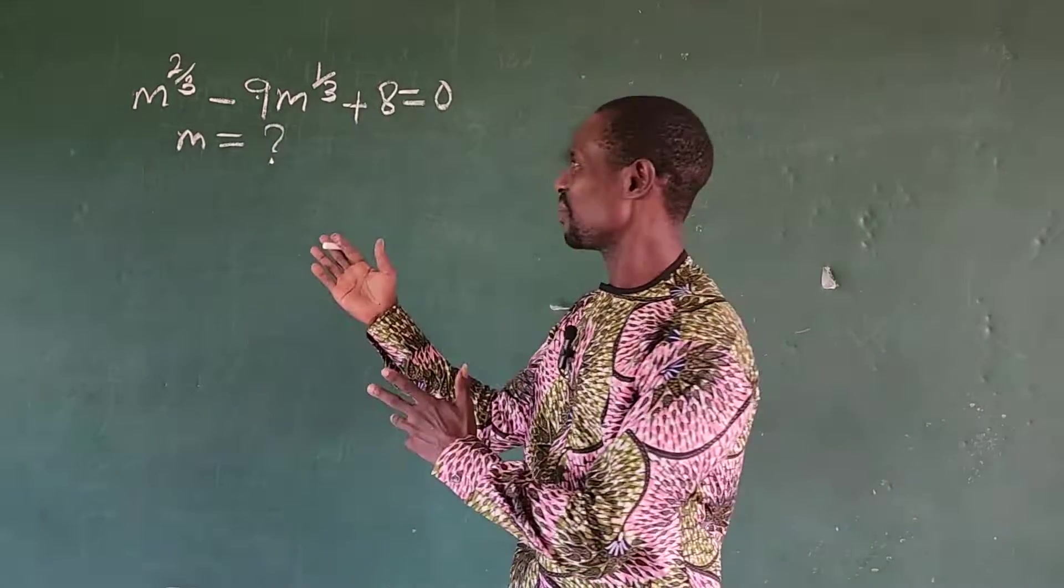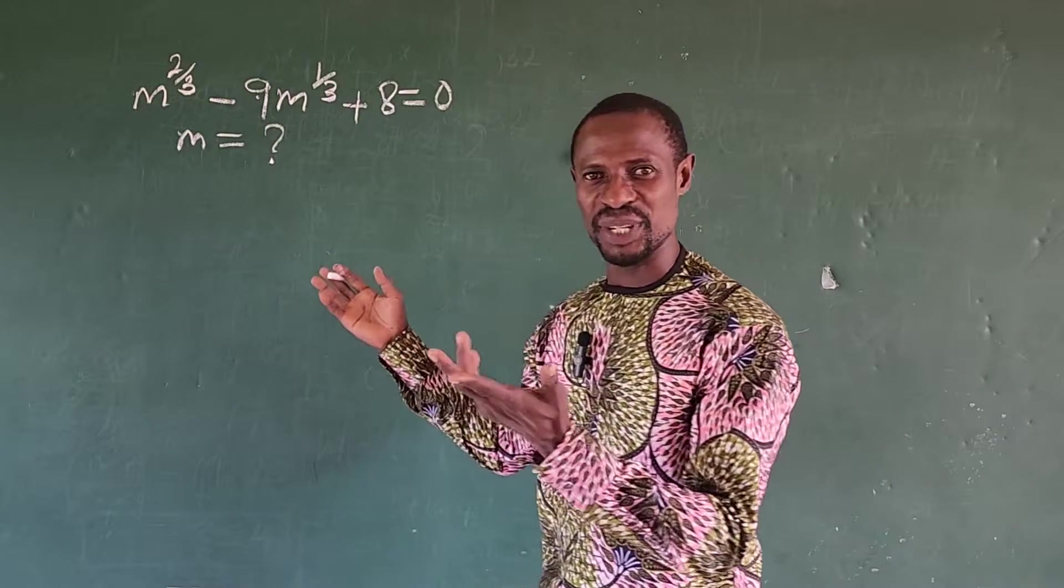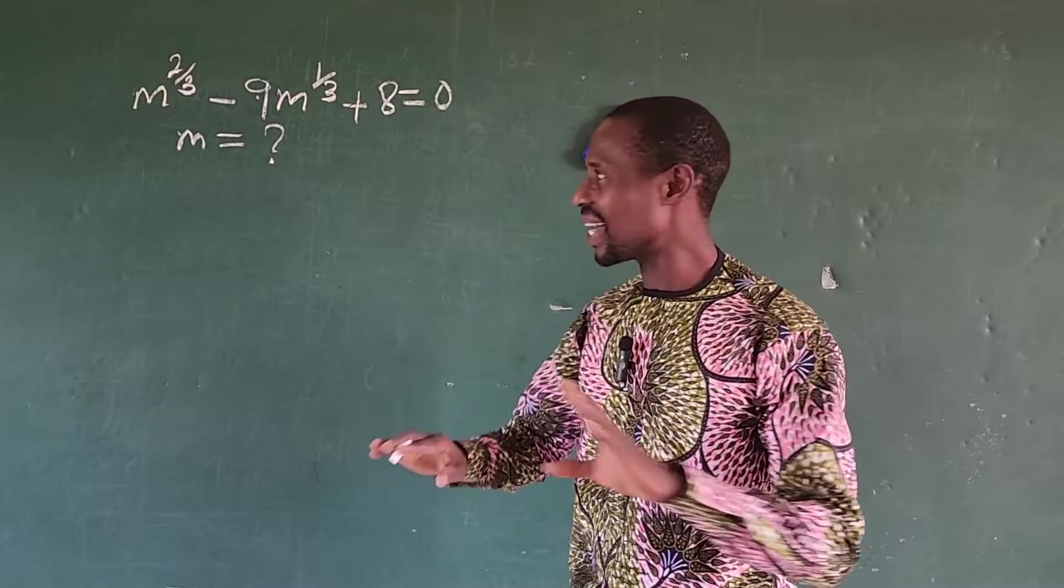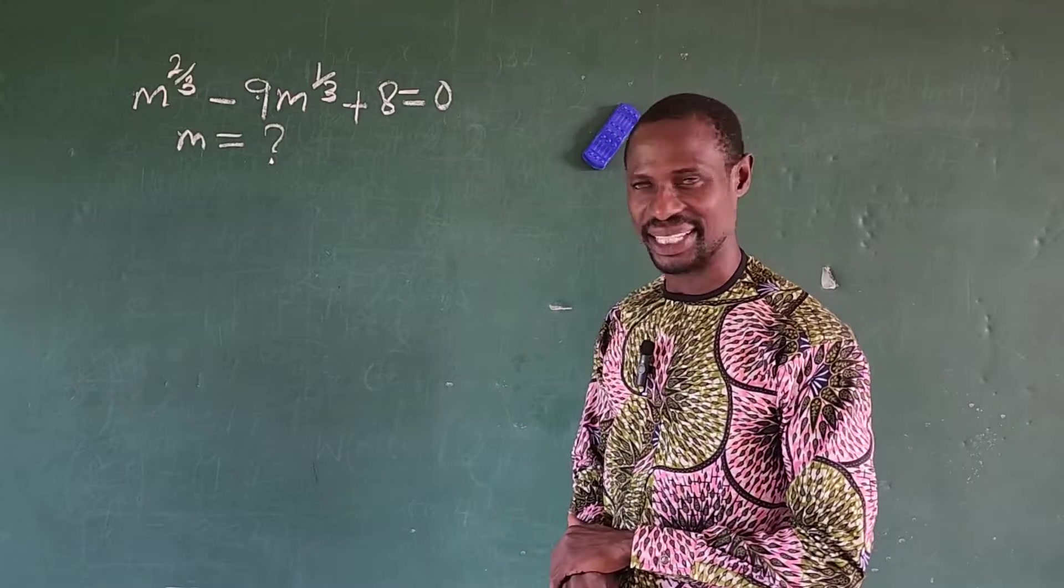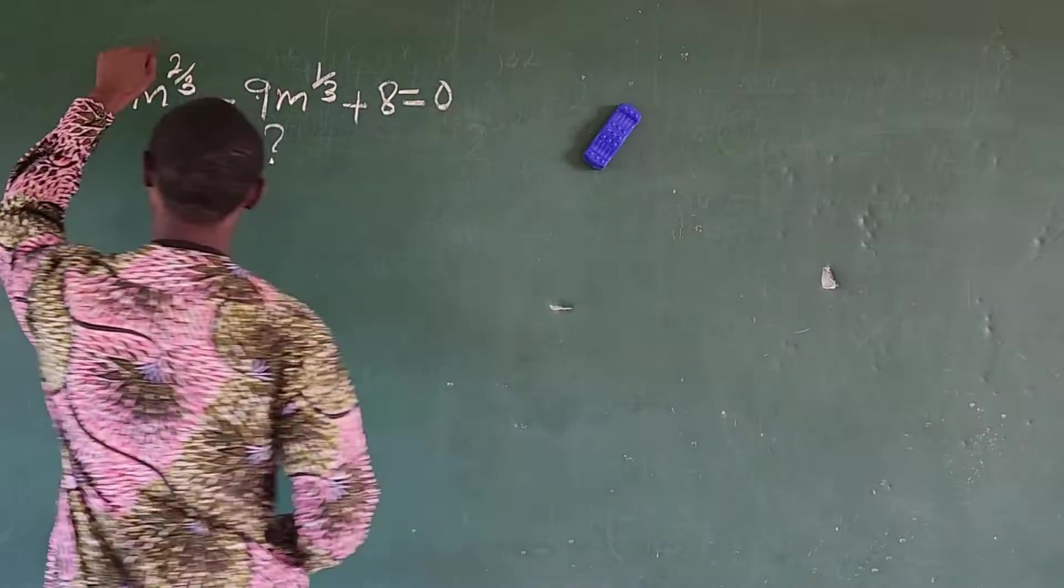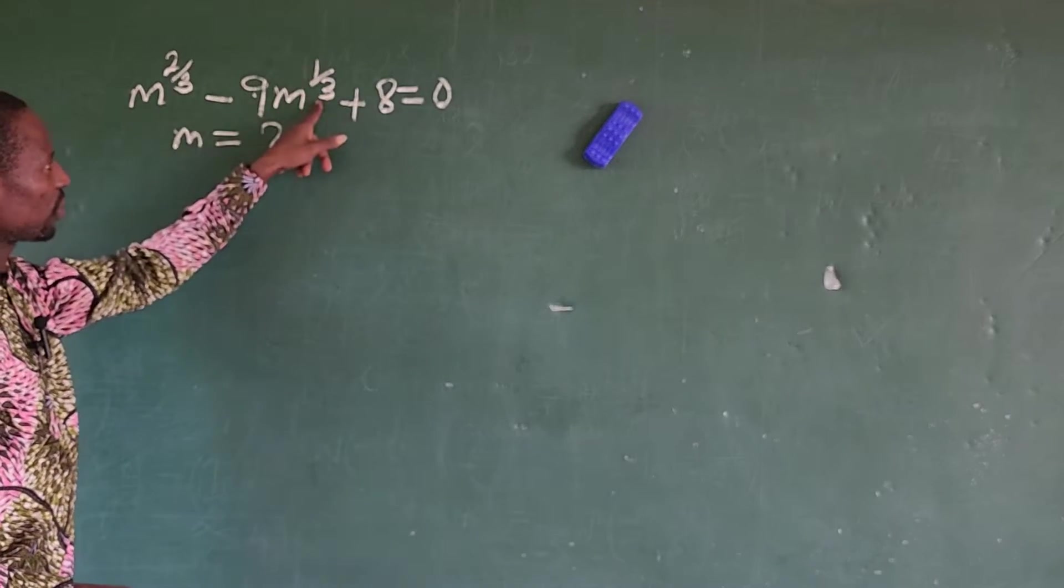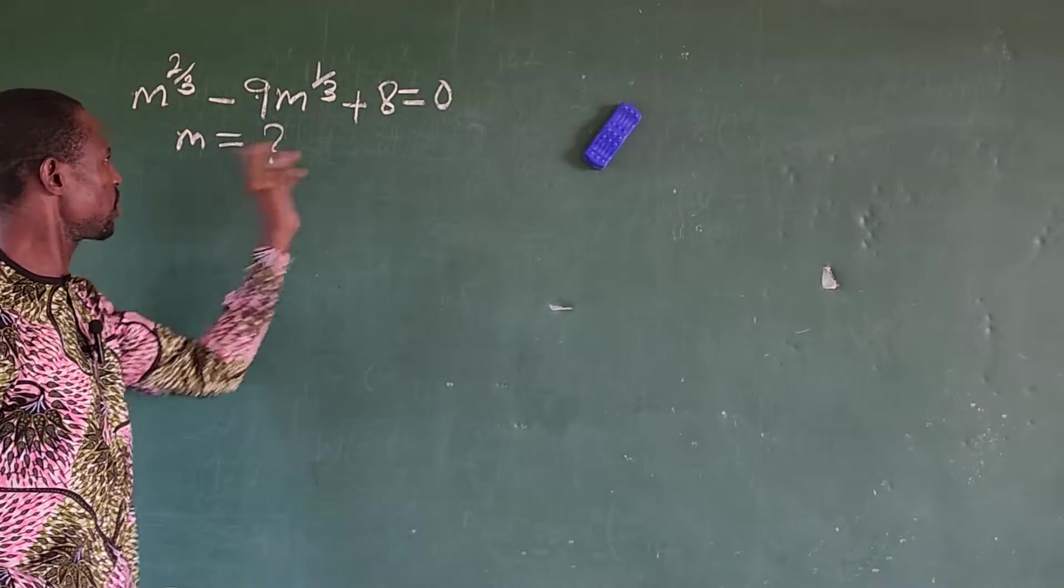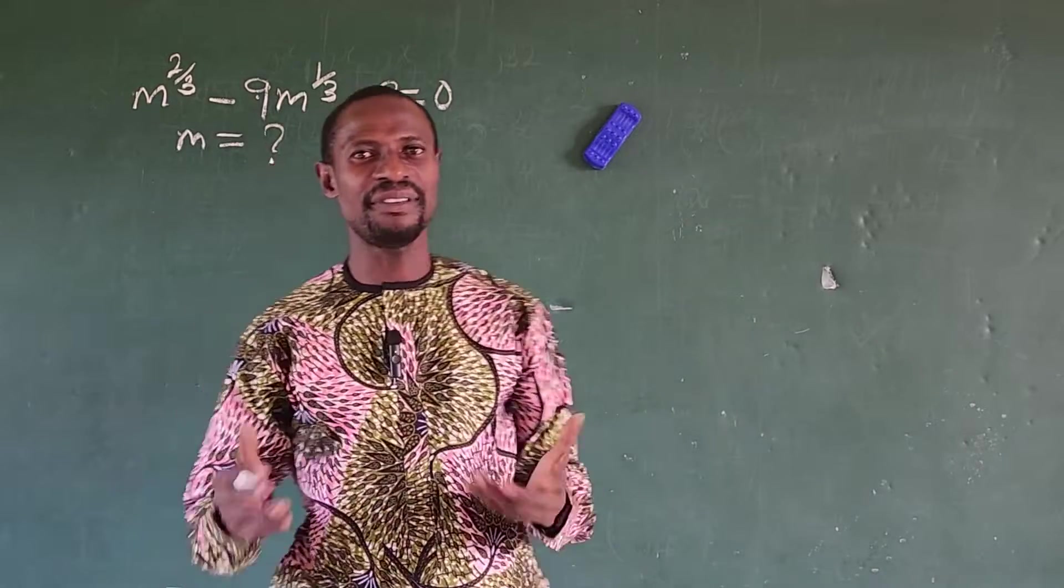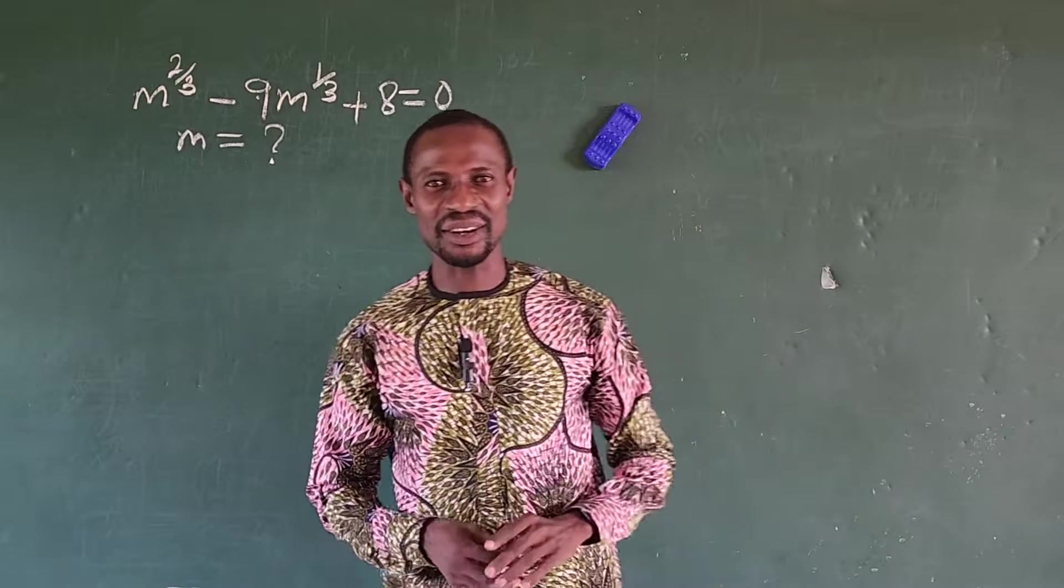Hello, everyone. Welcome to Today's Challenge. Here we have a very simple exponential equation, a very simple one. At a glance, you can get the answer to this. The question is m to the power of 2 over 3 minus 9m to the power of 1 over 3 plus 8 equals zero. That would be the possible value of m.